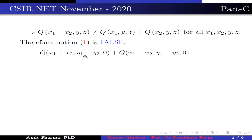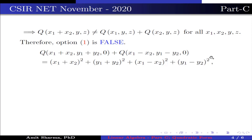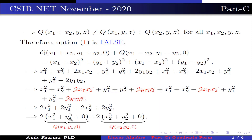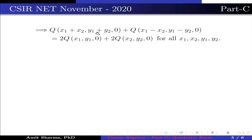Now Q(x1+x2, y1+y2, 0) + Q(x1−x2, y1−y2, 0) expands to (x1+x2)² + (y1+y2)² + (x1−x2)² + (y1−y2)². The cross terms 2x1x2 and −2x1x2 cancel, and 2y1y2 and −2y1y2 cancel. Adding remaining terms gives 2x1² + 2y1² + 2x2² + 2y2², which equals 2·Q(x1, y1, 0) + 2·Q(x2, y2, 0) for all x1, x2, y1, y2. Therefore, Option 2 is true.